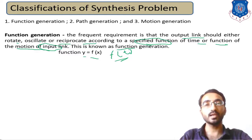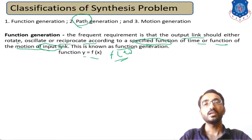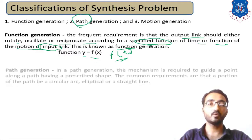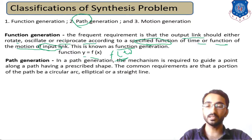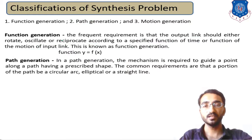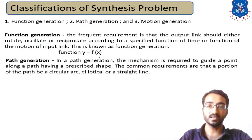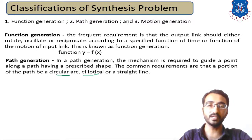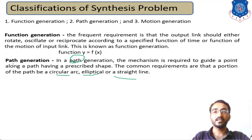The second classification is Path Generation. In path generation, we mainly focus on the desired path of the output — how the motion is occurring, whether it follows a circular, elliptical, or straight-line path. If you are focusing on the path of the desired output, then this method is known as Path Generation.